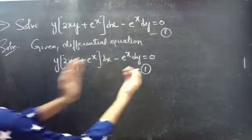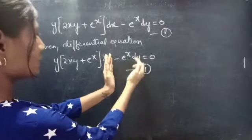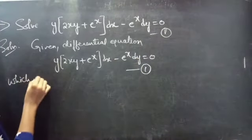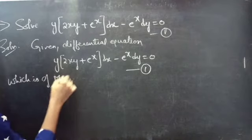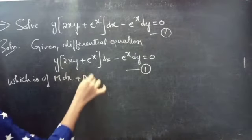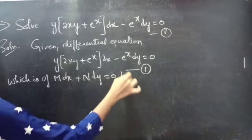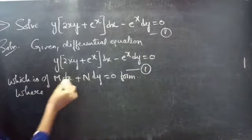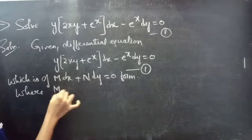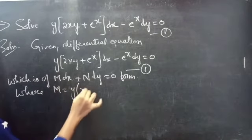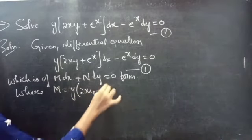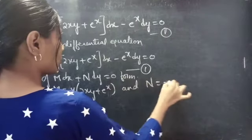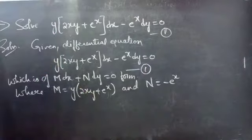This equation is of the form M dx + N dy = 0. By comparing these two, we get M = y(2xy + eˣ) and N = −eˣ.